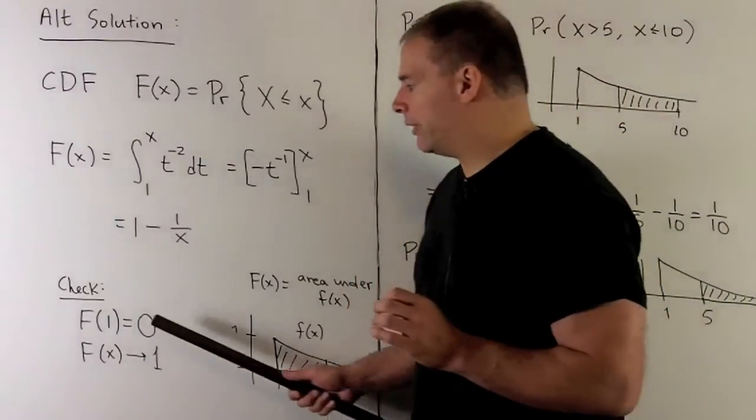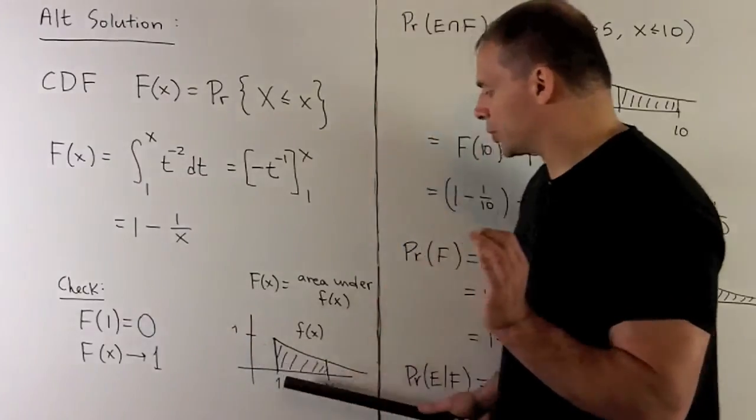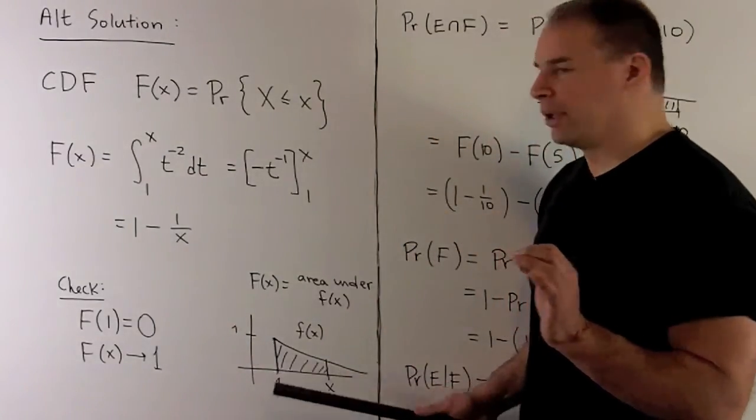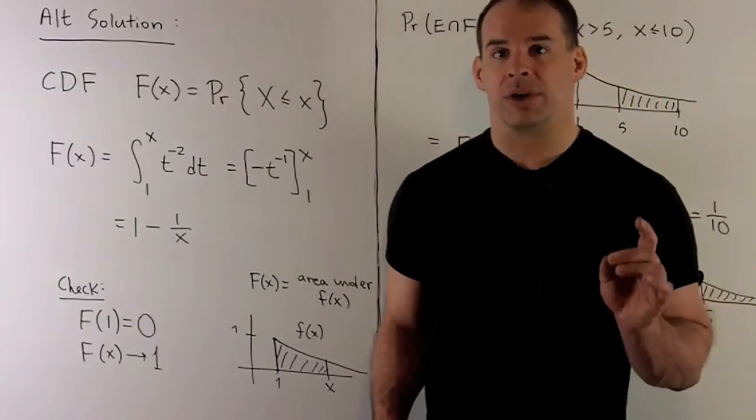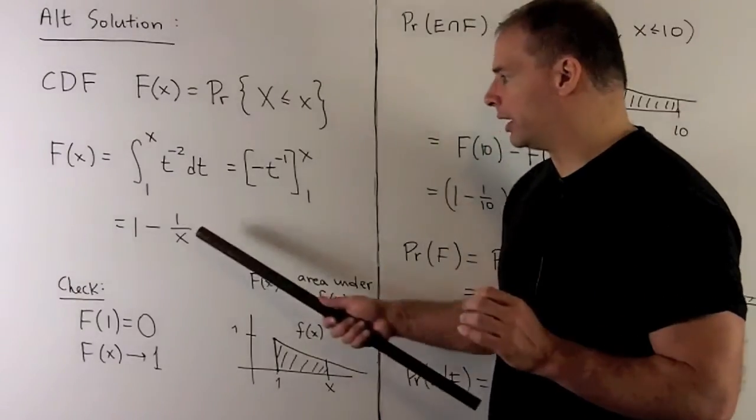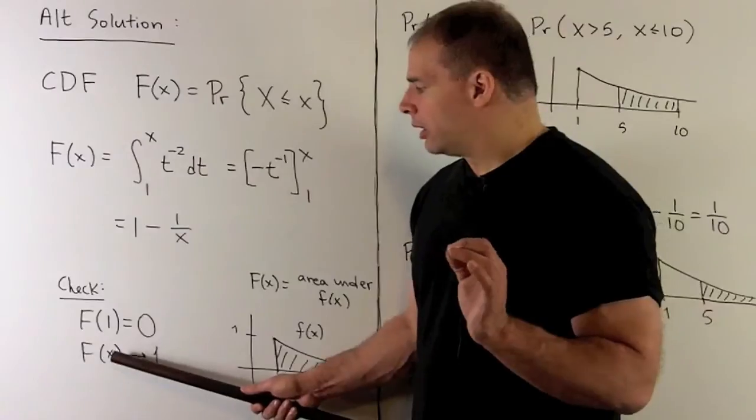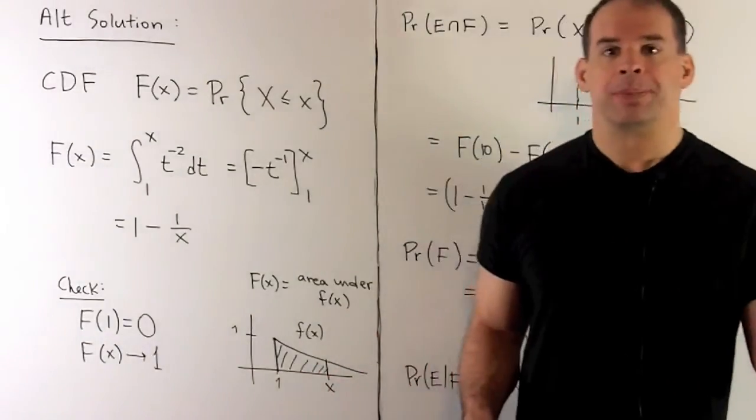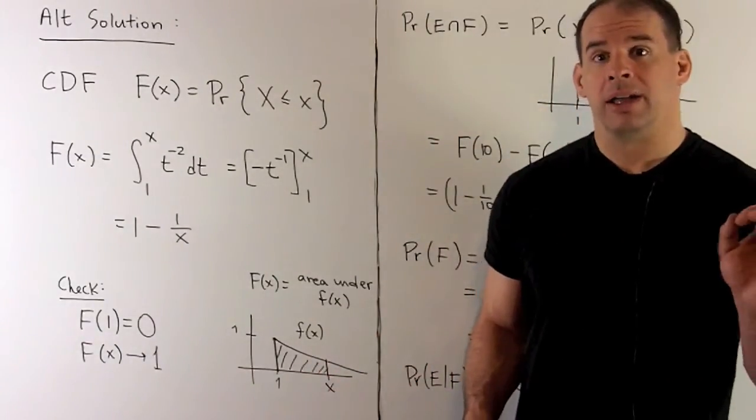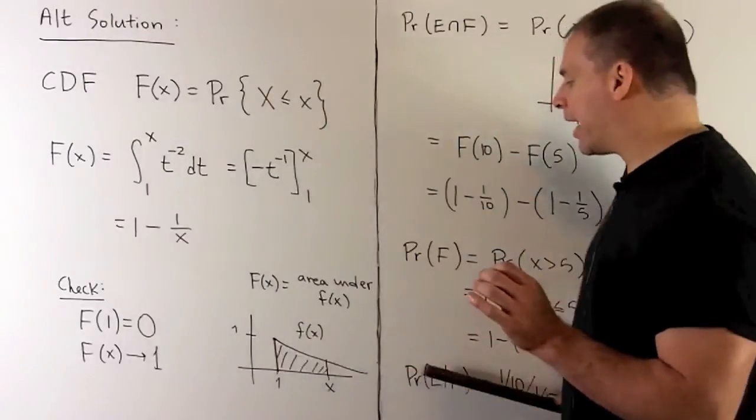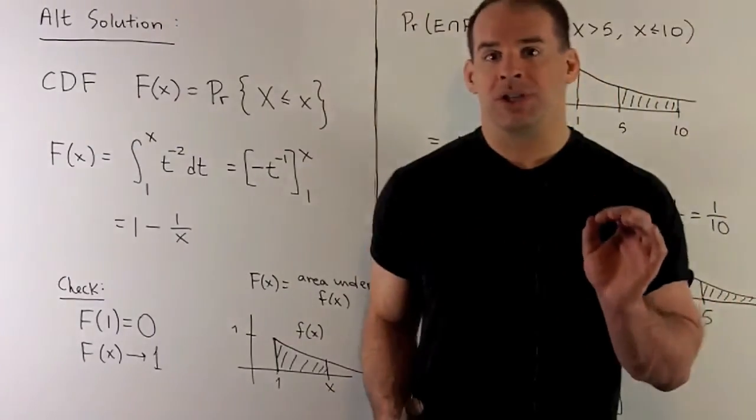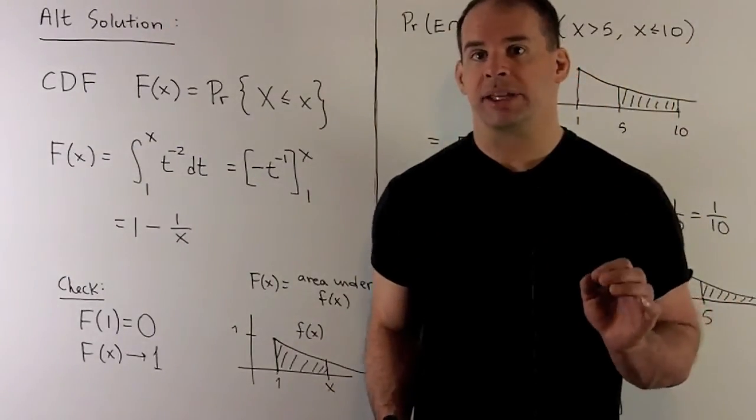Now, the checks on this. If we put a 1 in here, since we're starting at 1, the probability between 1 and 1 is gonna be equal to 0. And we know when we put 1 in here, a 0 comes out. If I let our x go off to infinity, our function should go to 1. That's just saying we're gonna take all the area, and that should go to 1 since we're considering a probability space.